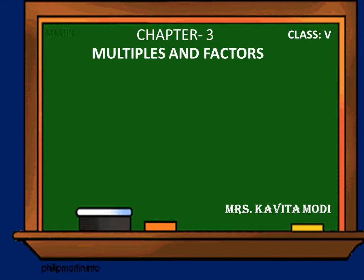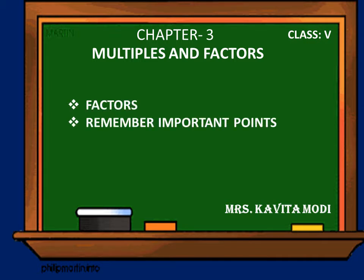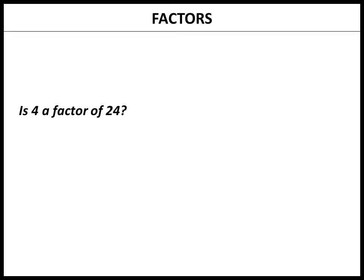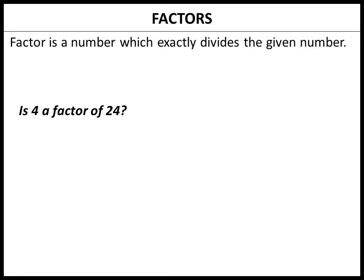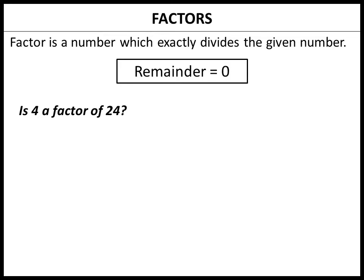In this chapter, our topics are Factors, some important points to remember, Highest Common Factor, and some examples. A factor is a number that divides the number exactly, with 0 as the remainder.